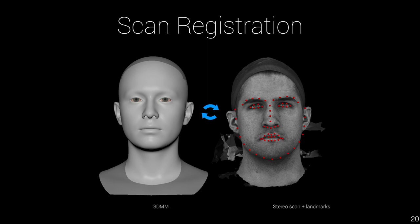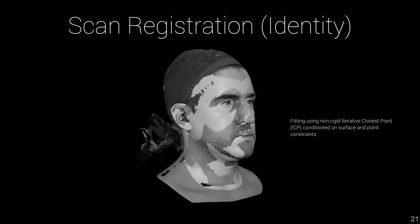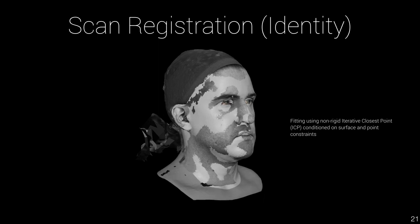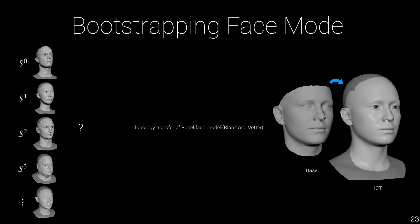Registering a new face consists of fitting the alpha parameters, or finding the feature vector that best approximates the new face. Using non-rigid iterative closest point, conditioned on both geometry and landmarks, the model can be morphed and the alpha parameters found. When building a linear face model, we wanted to avoid having to manually sculpt and fit all the face scans to get started, so we made use of a publicly available face model called the Basel Face Model and transferred all shapes to our topology.